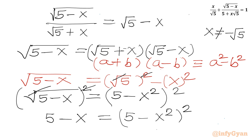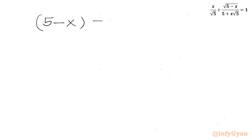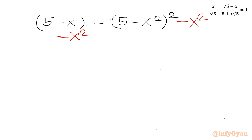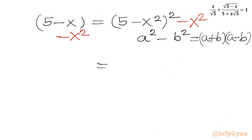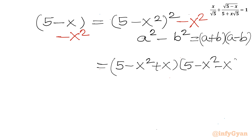Now I will use one manipulation step. The equation is 5 minus x equals 5 minus x squared, whole squared. I will subtract x squared from both sides. You can see the right-hand side is again a squared minus b squared form, which I will write as a plus b times a minus b: 5 minus x squared plus x, times 5 minus x squared minus x. Left-hand side is 5 minus x minus x squared.